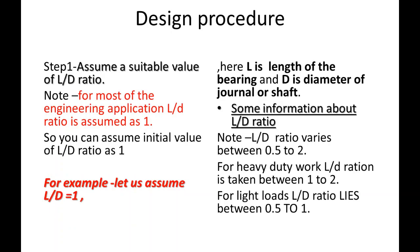In step number 1, we will assume the L by D ratio, where L is the length of the bearing and D is the diameter of the journal. The value of L by D ratio lies between 0.5 to 2 for journal bearings. For heavy load applications it lies between 1 to 2, and for light load applications between 0.5 to 1. In most engineering applications, the L by D ratio used is 1, so we will initially assume it as 1.